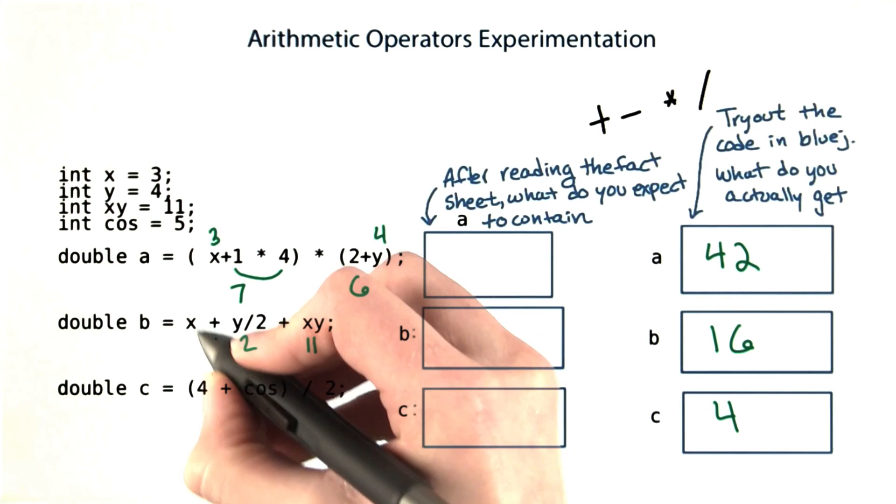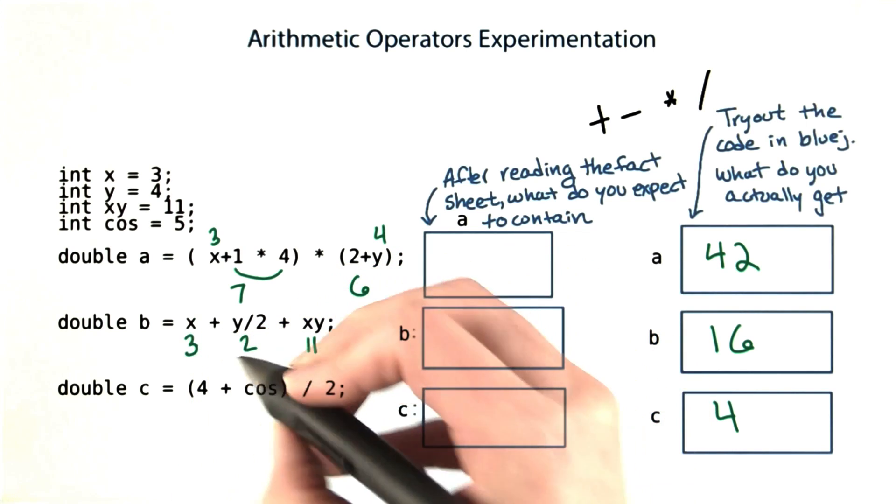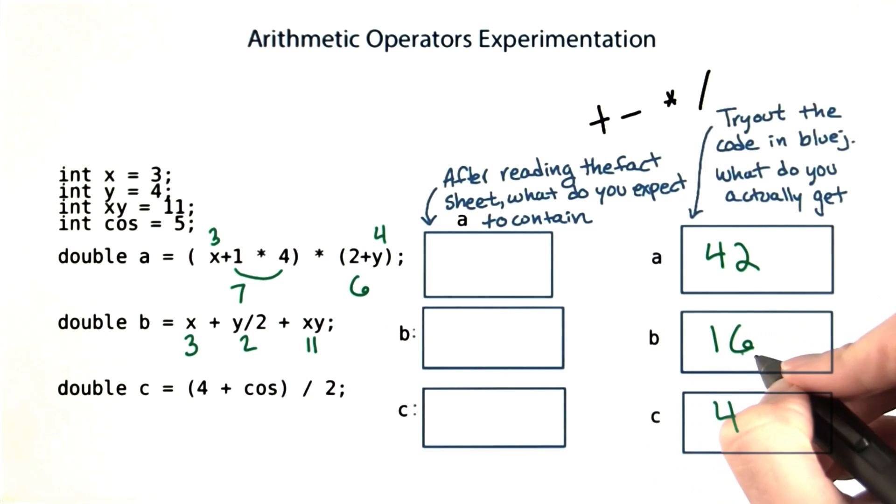Then y over 2, and 3. 3 and 2 and 11 gives us 16.